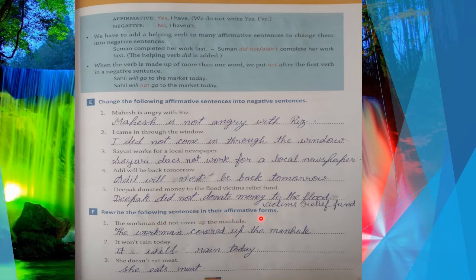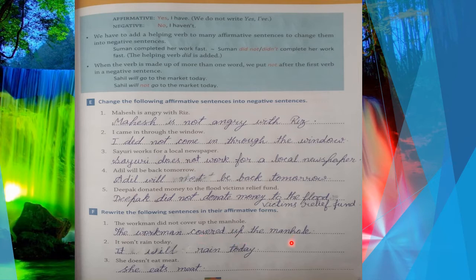Next is: 'Rewrite the following sentences in their affirmative form.' In this question you have to change negative sentences into affirmative. The first is: 'The workman did not cover the manhole.' Since 'did not' means simple past, we use the verb's second form to change to affirmative: 'The workman covered the manhole.'